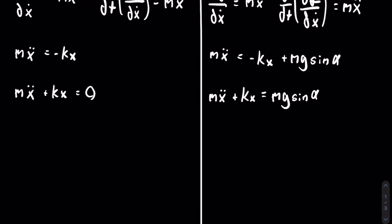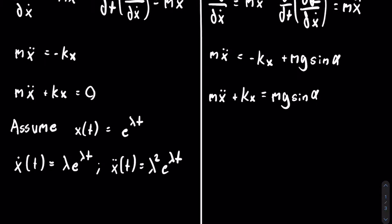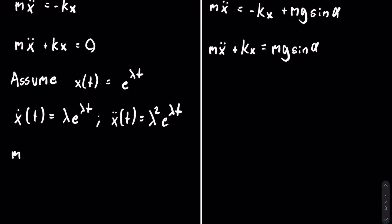The equation on the left is a linear homogeneous differential equation, and its solution is needed to solve the equation on the right. So let's assume that x of t is equal to e to the lambda t. Using the chain rule, x-dot of t equals lambda e to the lambda t, and x-double-dot of t equals lambda squared e to the lambda t. Plugging our assumption into the original differential equation, we get m lambda squared e to the lambda t plus k e to the lambda t equals zero.